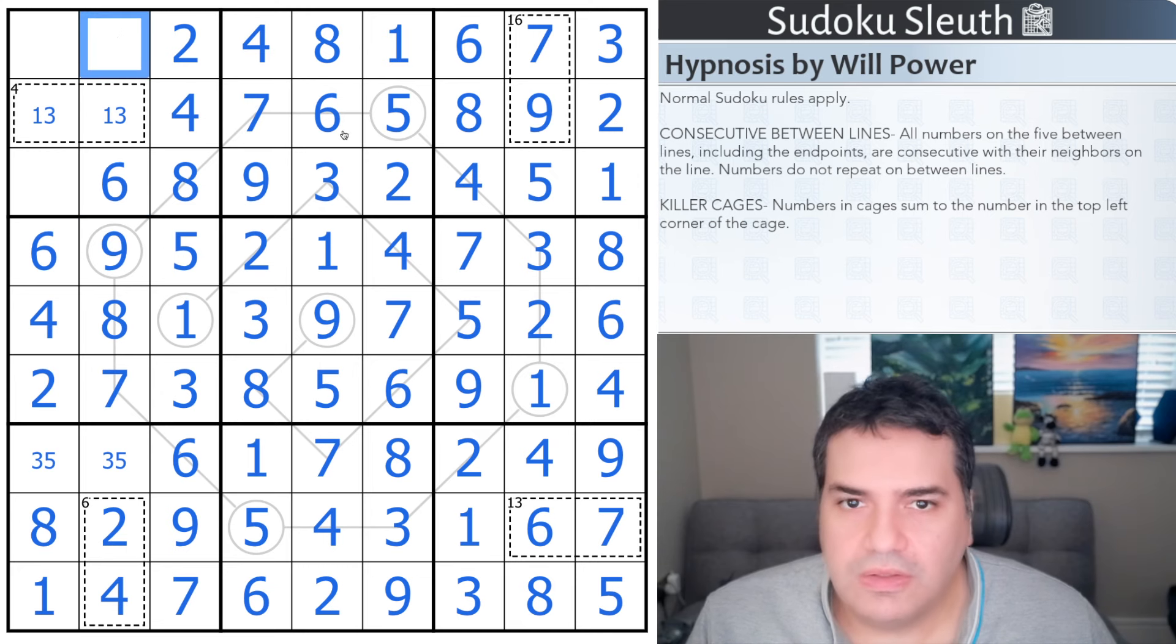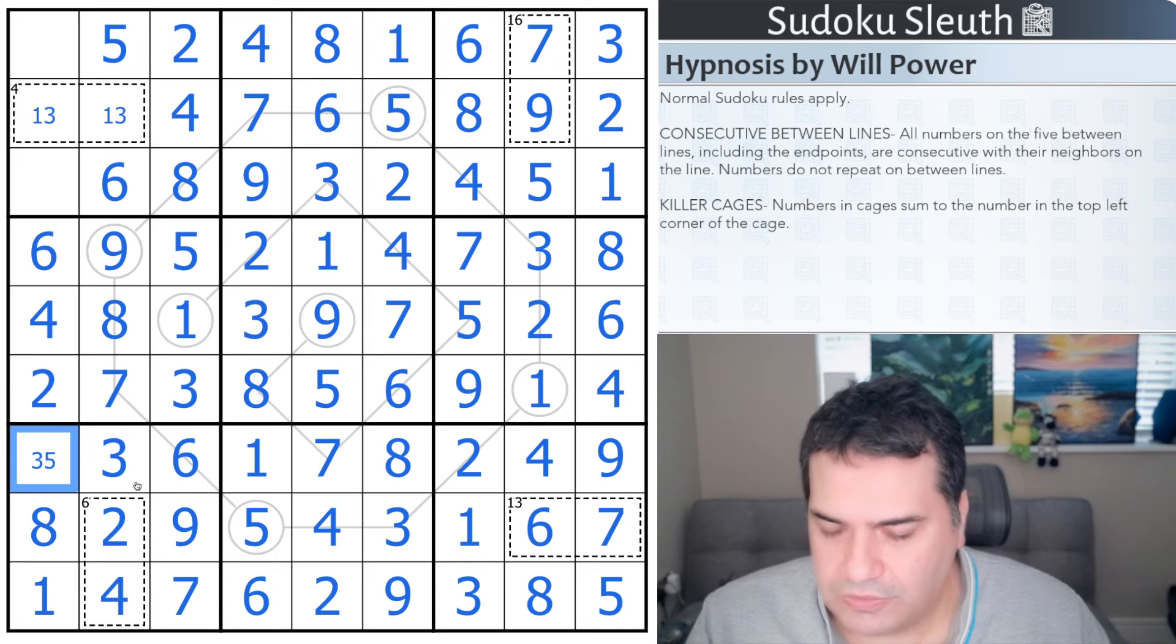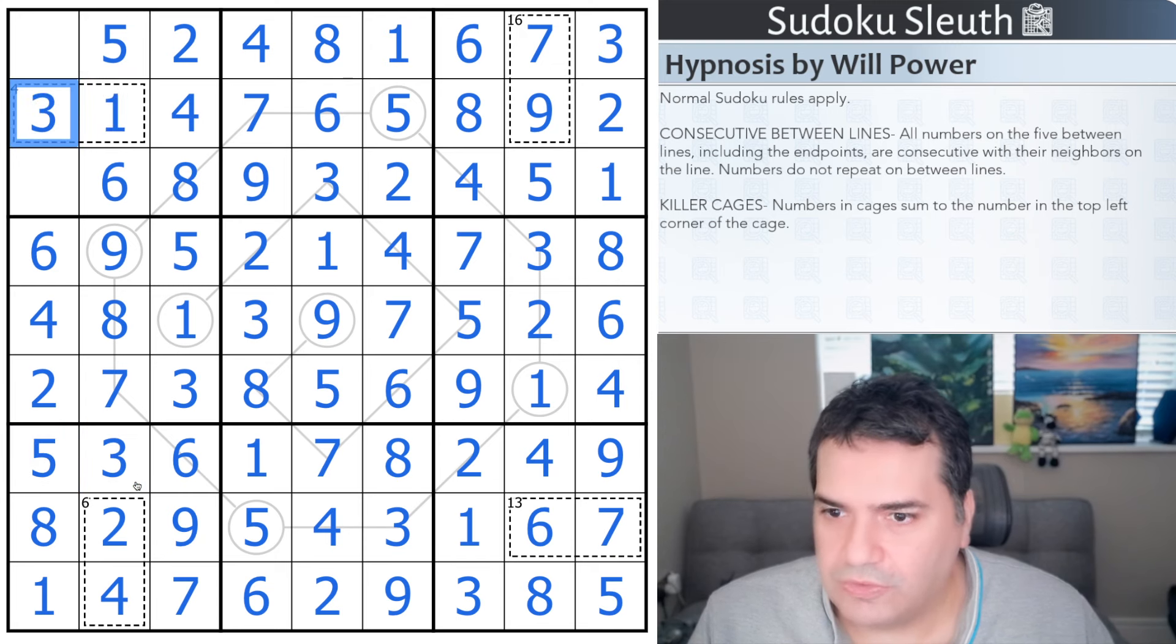Then I need one, three, or five. It is not one or three. That's a five. Therefore that's three. That's five. That's one. That's three. And we're very much at the finish. That's seven.